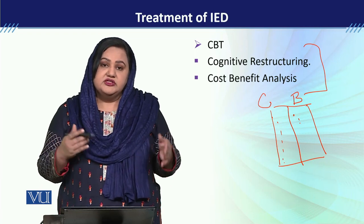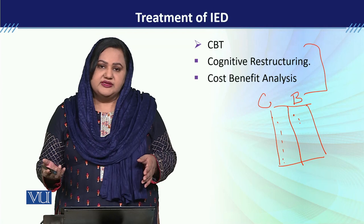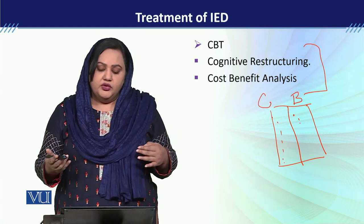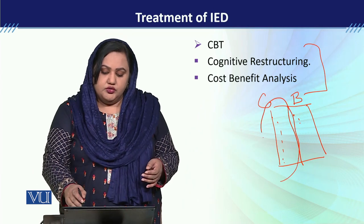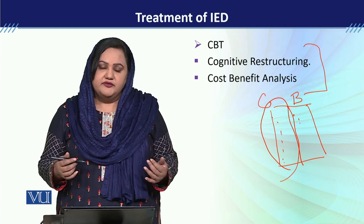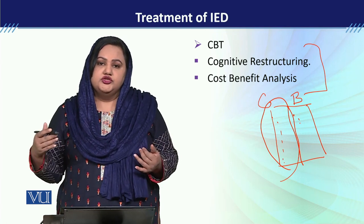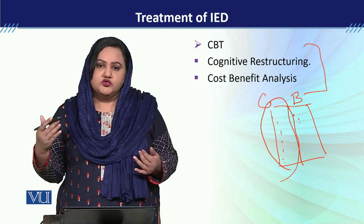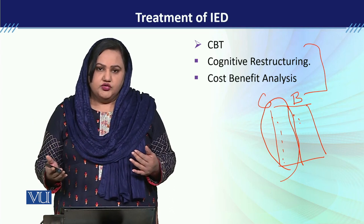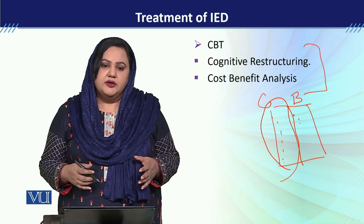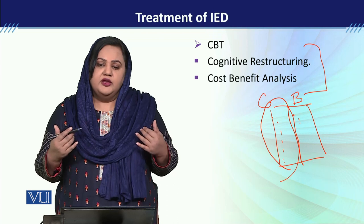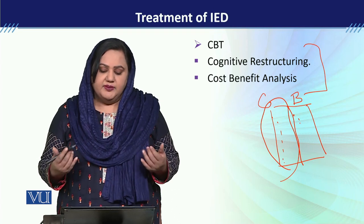Do you think کہ جس چیز کے costs زیادہ ہوں وہ behavior آپ کو exhibit کرنا چاہیے، یا وہ جس کے benefits زیادہ ہوں؟ In that way we are able to make him realize کہ جو اس کا aggressive behavior ہے اس کے benefits کم ہیں، تو he or she should adopt those behaviors جس کے benefit زیادہ ہو اور cost کم ہو۔ اس طرح cost-benefit analysis کے ذریعے ہم بچے کو inform کر سکتے ہیں کہ in which way he or she should behave calmly.